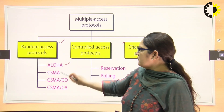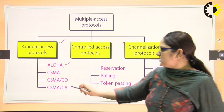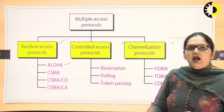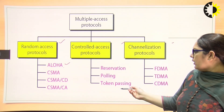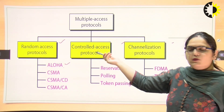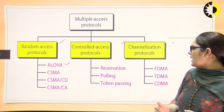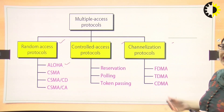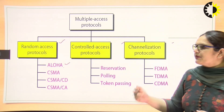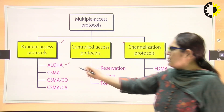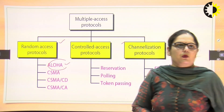In random access protocols we have Aloha, CSMA, CSMA/CD, CSMA/CA, and reservation polling. Token passing are the methods for controlled access protocols. In channelization protocols we have FDMA, TDMA, and CDMA. In this particular lecture I will discuss about the Aloha protocol.